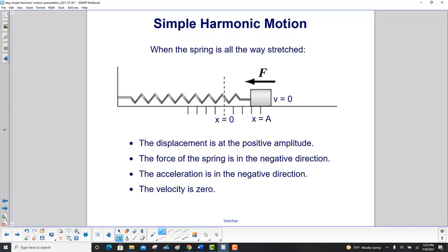When the spring is all the way stretched, and that's at the x equals A position, it started at minus A and it'll go to positive A, it momentarily stops and changes direction. So at that point, the velocity is zero. When your displacement is at the positive amplitude, the force of the spring is in the negative direction. It's trying to pull it back. The acceleration is in the negative direction, because whatever the sign on the force is, that's what the sign on the acceleration is. And the velocity is zero.